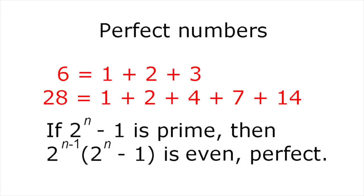Mersenne primes can be used to find another kind of interesting number known as perfect numbers. A perfect number is a whole number that is equal to the sum of all its factors except itself. For example, 6 is a perfect number, because its factors 1, 2, and 3 add to give 6. The next smallest is 28, the sum of 1, 2, 4, 7, and 14.